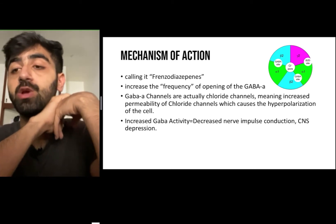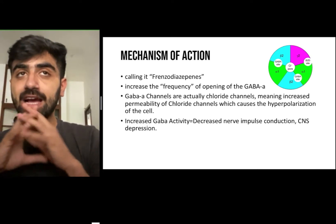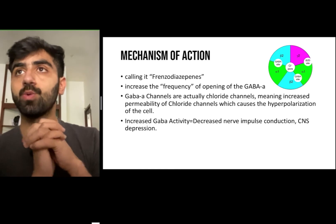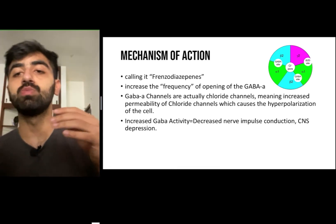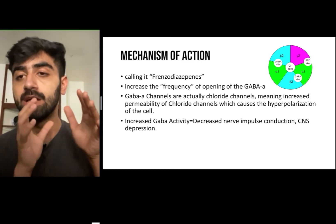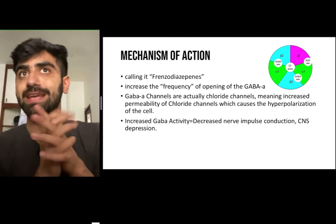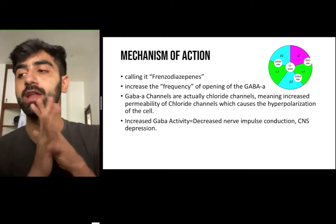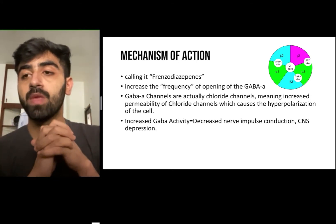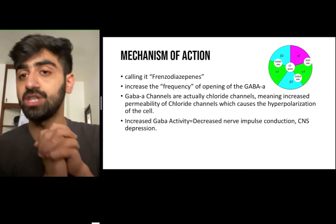Frenzodiazepines increase the frequency of the opening of the GABA-A channel. A GABA-A channel is an inhibitory channel located in the wall of a neuron which, when open, causes negative chloride ions to move inside the neuron. When these negative chloride ions move inside the neuron, they cause hyperpolarization of the cell. At resting membrane potential, a neuron is already negative — around minus 45 to minus 60 or 70.